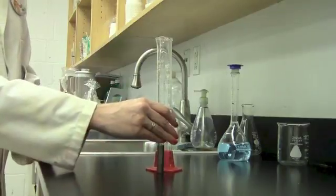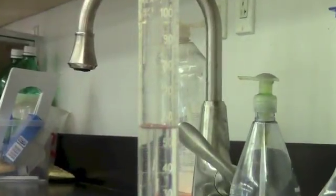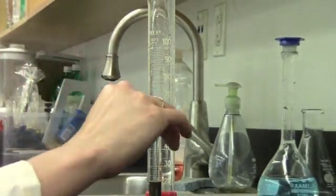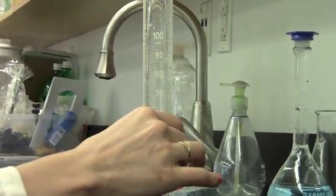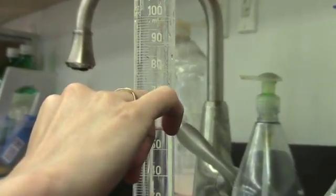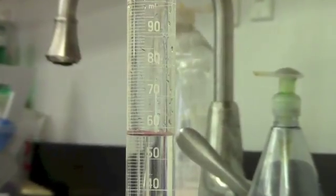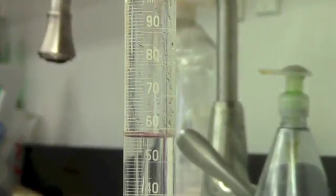Now I'm going to take a precise reading of the initial volume of the water in the cylinder. Again, get on eye level with the meniscus. And I can see that this is between 57 and 58. So I'm going to call this 57.5 milliliters of water.